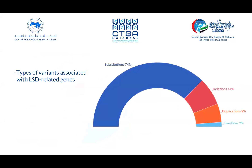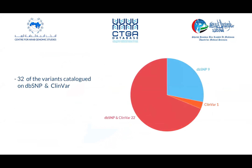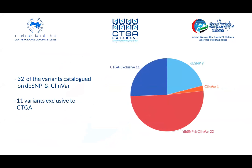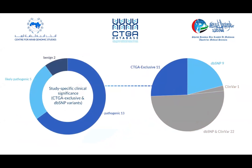The data on variants on CTGA include descriptions on the type of mutation and zygosity status, as well as their presence on mainstream public databases such as dbSNP and ClinVar. CTGA additionally holds exclusive variant data and variant observations, reporting coordinates and clinical significance described specifically in published reports.